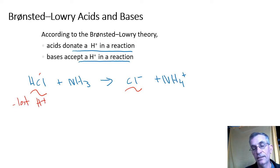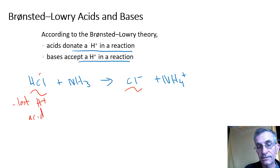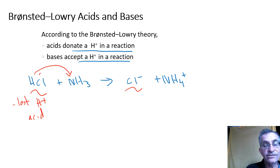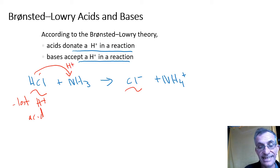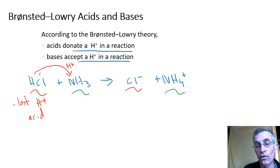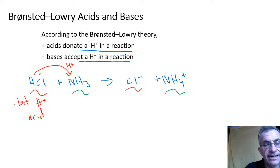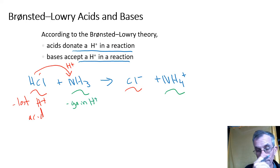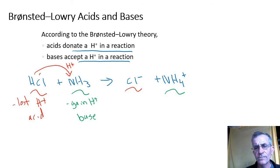If you lose a hydrogen you are acting as an acid. Now where did that hydrogen go? It went over to NH3. NH3 turned into NH4⁺ — it went from three hydrogens to four, so it gained a hydrogen. If you gain a hydrogen, you are the base.